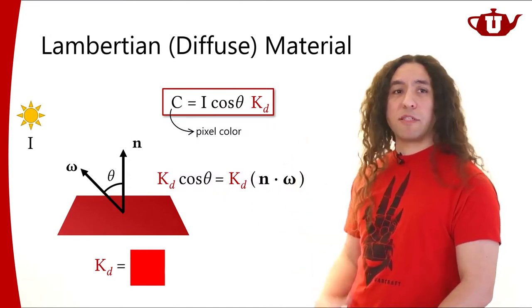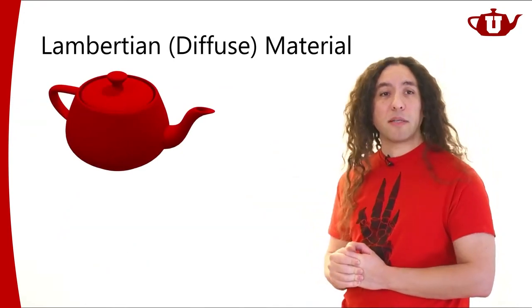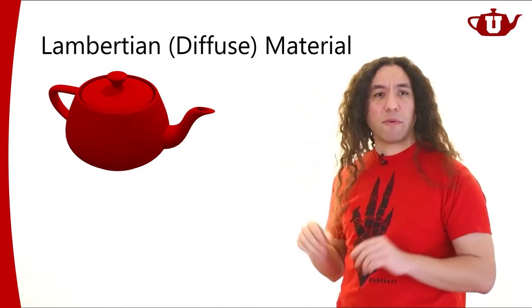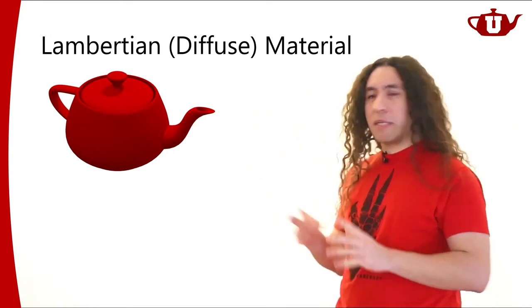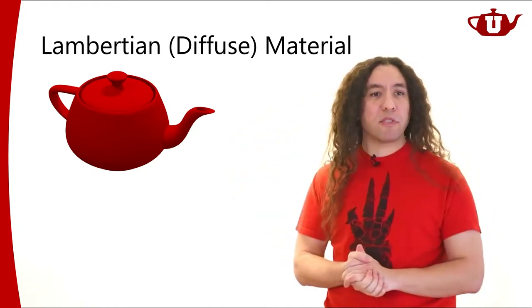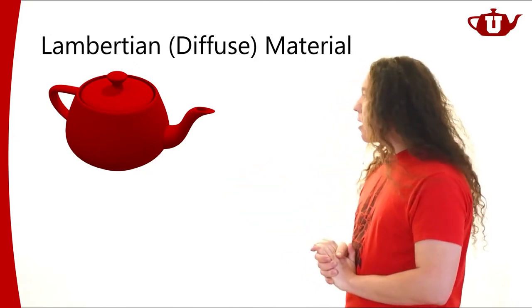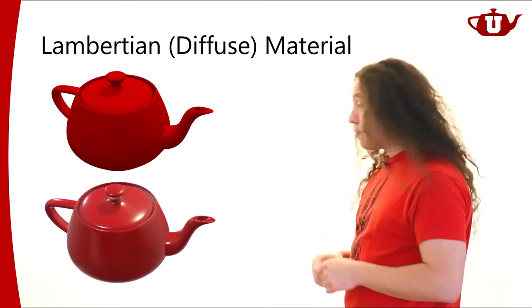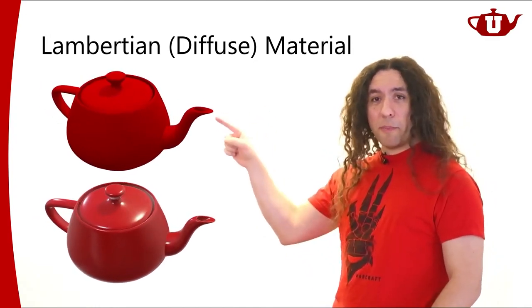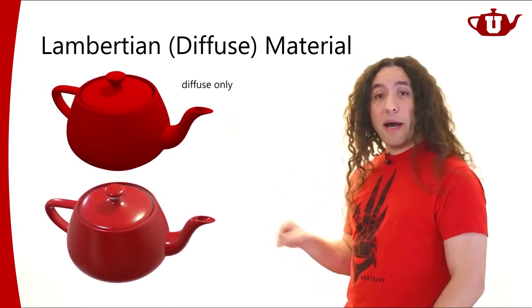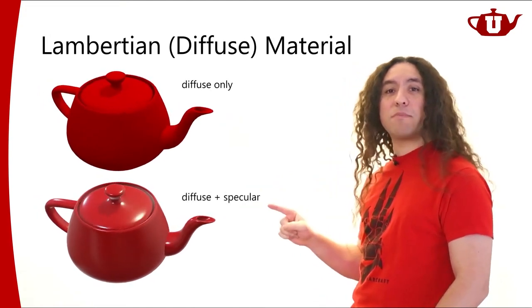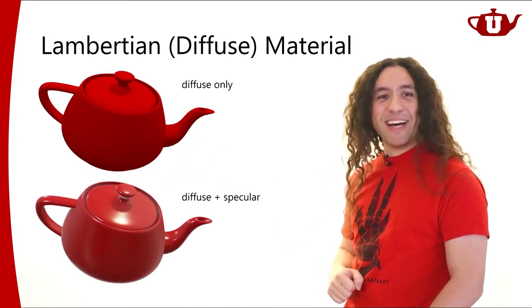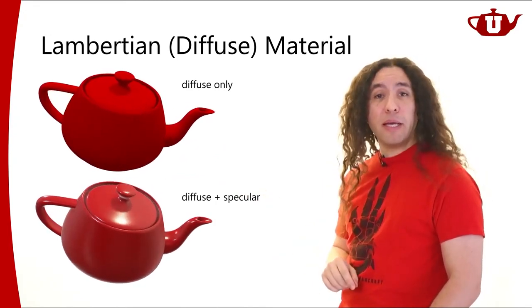The Lambertian material is the simplest material we can think of. The entire material property is defined by a single color value. Here's a teapot with a Lambertian material illuminated from multiple directions — it looks okay, you can see the 3D shape, but it doesn't look particularly appealing. The next one has an additional specular component — the shiny white bits you see — that's the specular term.